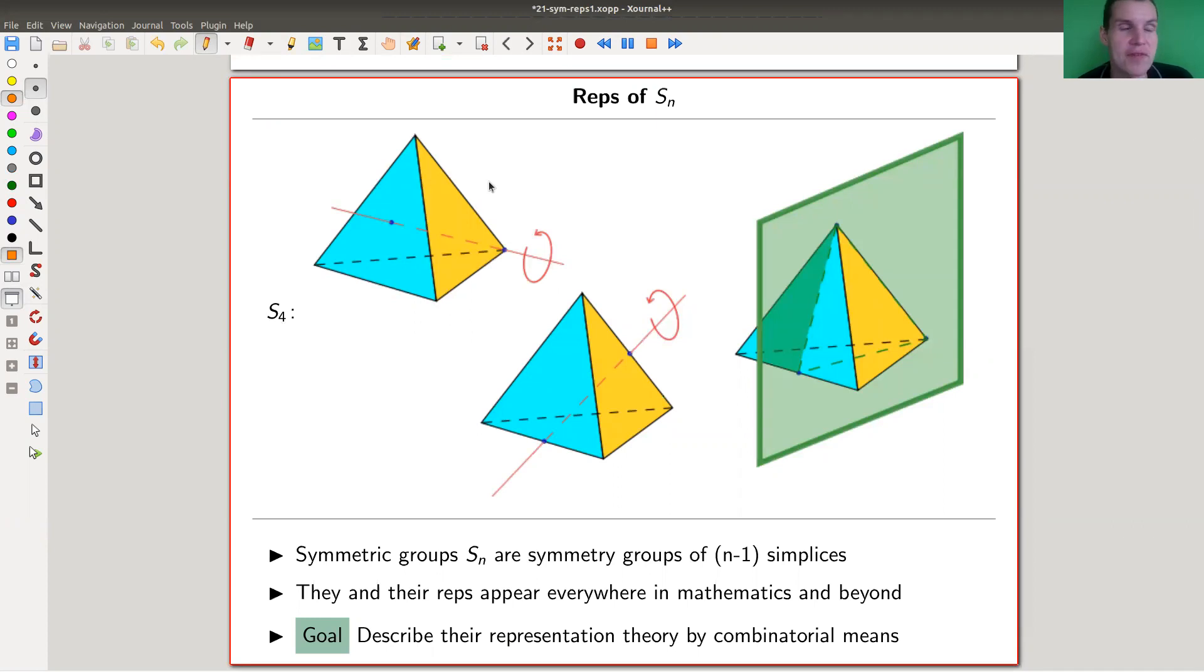So S_n of course is a permutation group, a symmetry group. If you wanted to in geometric pictures, it's a symmetry group of a simplex. The only confusing point here is always that you have an off by one error.